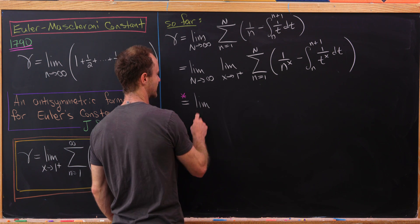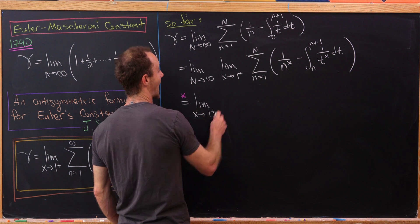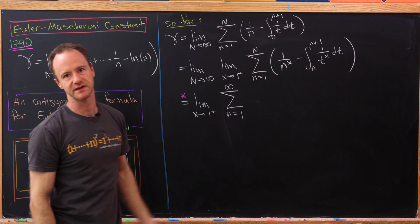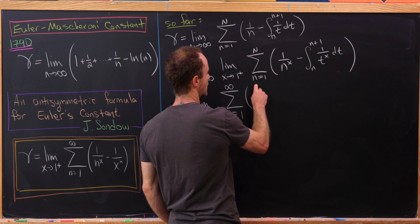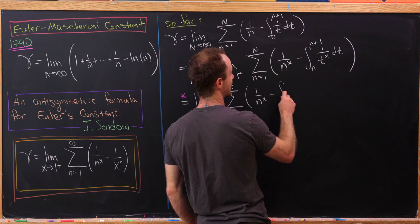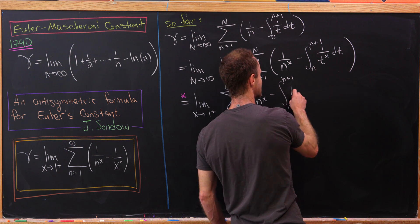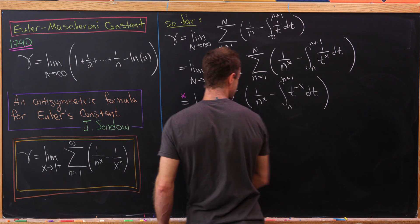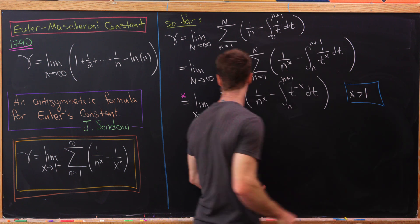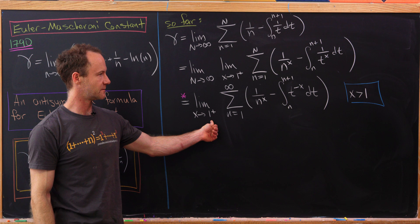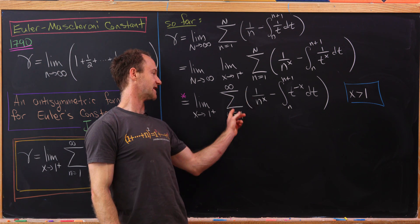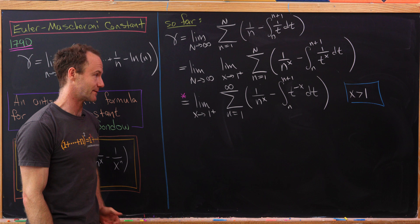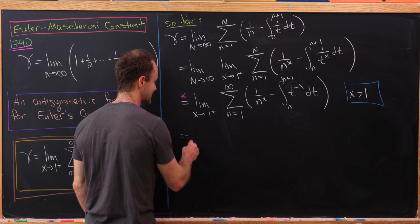Exchanging the order of our limits, we have the limit as x goes to 1 from above, and now we have the sum as n goes from 1 to infinity of 1/n^x minus the integral from n to n+1 of t^(−x) dt. Notice in our region, x is strictly greater than 1 because we're letting x approach 1 from above. That means the sum as n goes from 1 to infinity of 1/n^x converges absolutely, so we can split this into two sums.